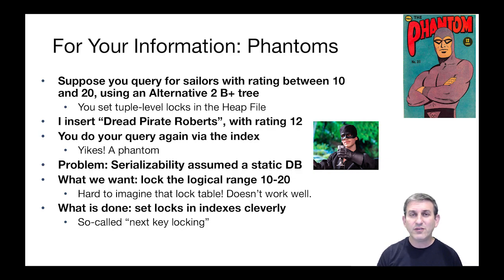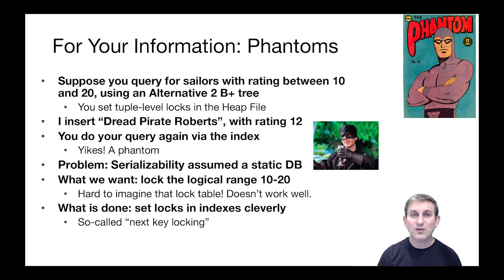The problem with this scenario is that all the work we've done so far on serializability has assumed no inserts into the database — we've assumed the database is static. What we really want in this query, when we look between 10 and 20, is to lock a logical range from 10 to 20, including any tuples that might fall into that range in the future. But it's hard to imagine how you would build a lock table for locking ranges of things. After all, a hash table only locks equality values. We'd have to come up with some new data structure to hold this lock table, and experience has shown that doesn't work very well.